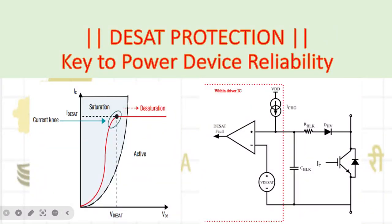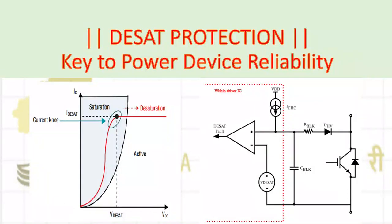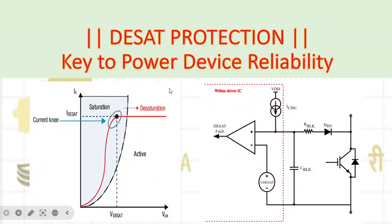On your screen you can see the circuit for DSAT protection: one C_blk, R_blk, and one diode, and a comparator. Using these components we can design a DSAT circuit to protect the device. Now, regarding the name — looking at the IGBT characteristics with saturation, active, and cutoff regions — DSAT means the device is going outside the saturation region, hence the name DSAT.